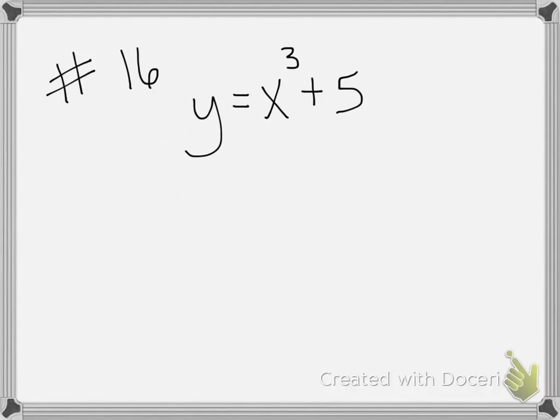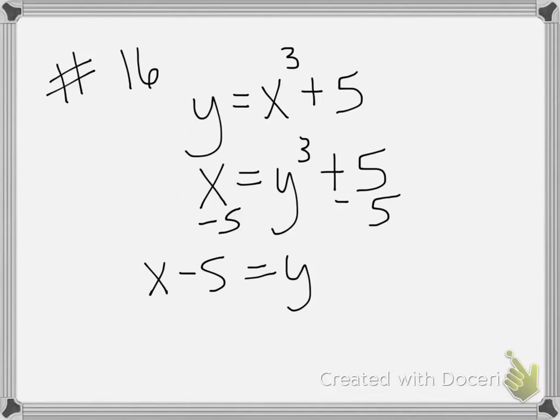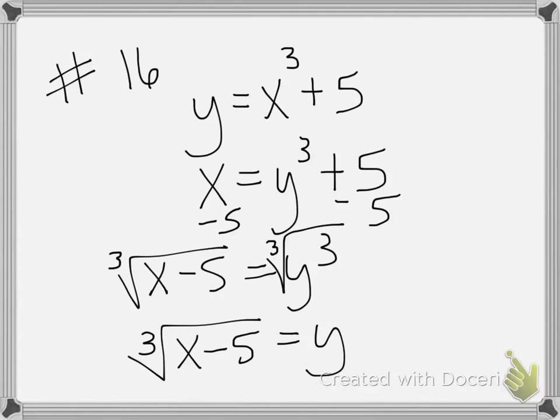The next problem is number 16. This is a problem where you're trying to find the inverse. Remember for inverse you take the x and the y and you switch them. So the first step is really simple. We switch the x and the y. The next step is not quite as simple because now we have to solve it to where y is by itself. So subtract 5 from both sides. That gives me x minus 5 equals y to the third power. To get rid of the third power I have to use the cube root on both sides. So I have the cube root of x minus 5 equals y. So the inverse of x cubed plus 5 is the cube root of x minus 5.